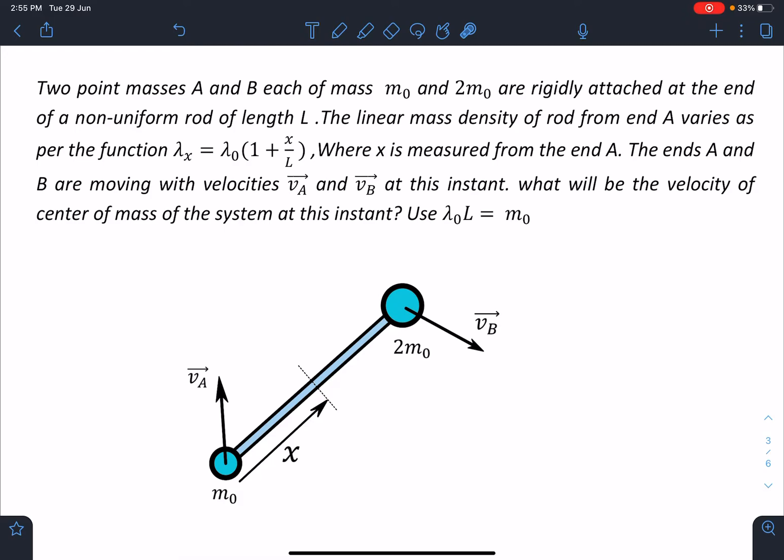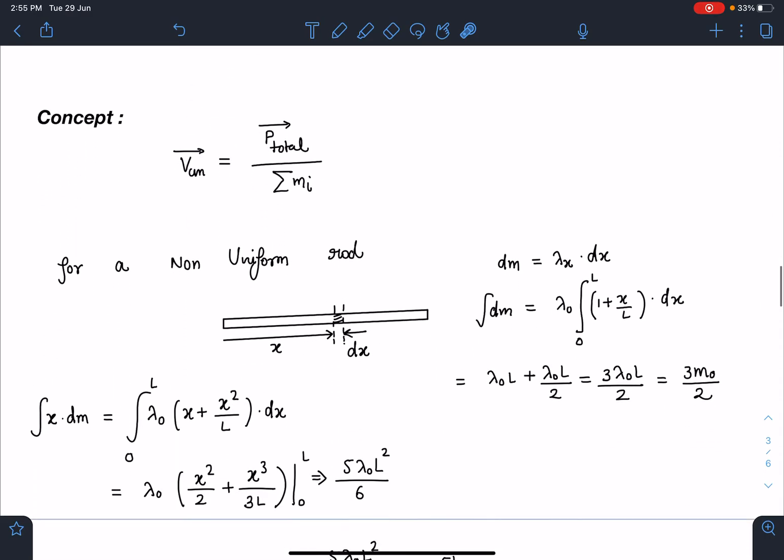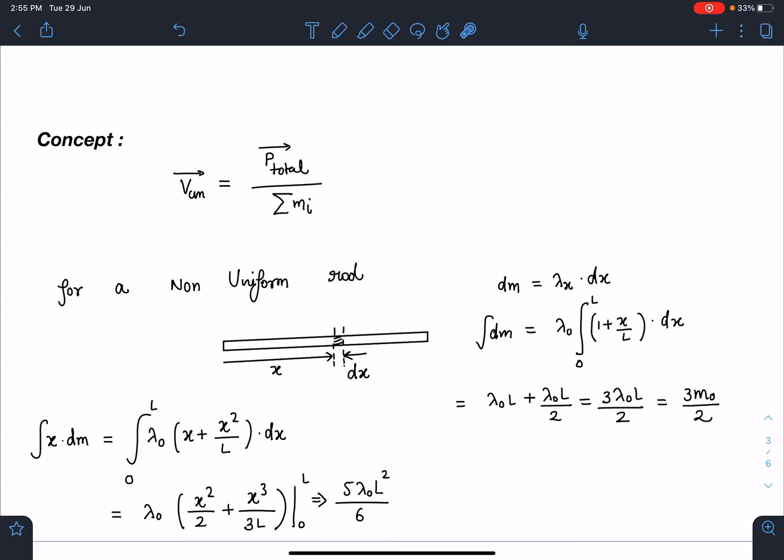This problem is a pretty special problem. When I gave this problem in my batch for current JEE 2021 students, they could not solve it. I hope you will love the solution I am going to present here. Concept wise, you can write VCM as total linear momentum of the system divided by total mass, or you can write for individual parts momentum. For a non-uniform rod, we can calculate the center of mass using integral xdm divided by integral dm.